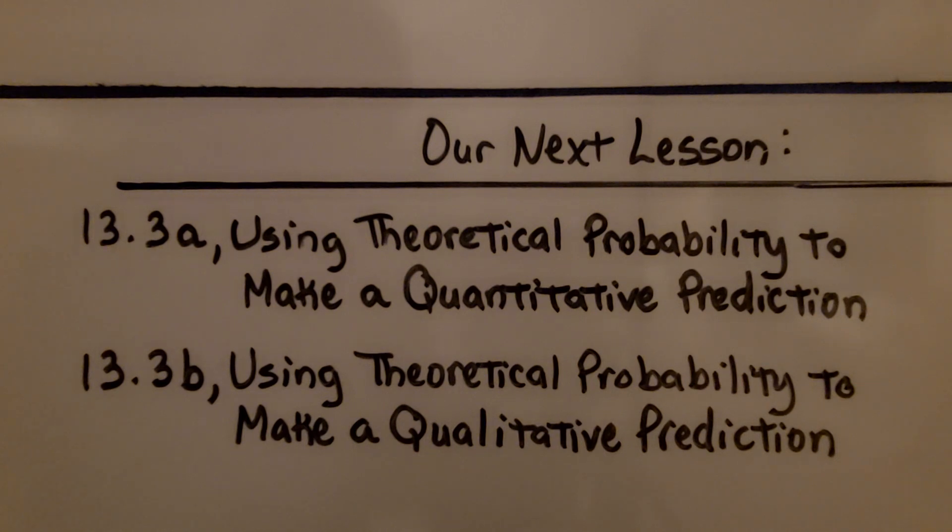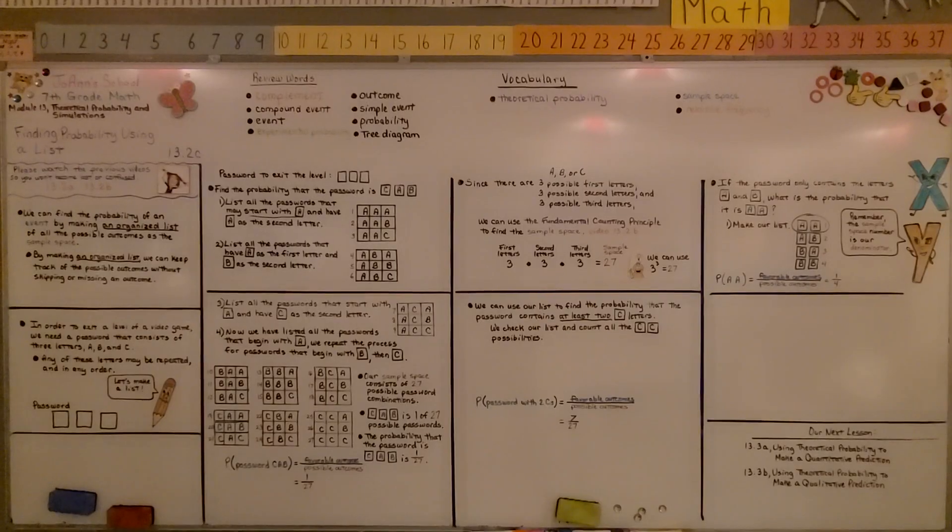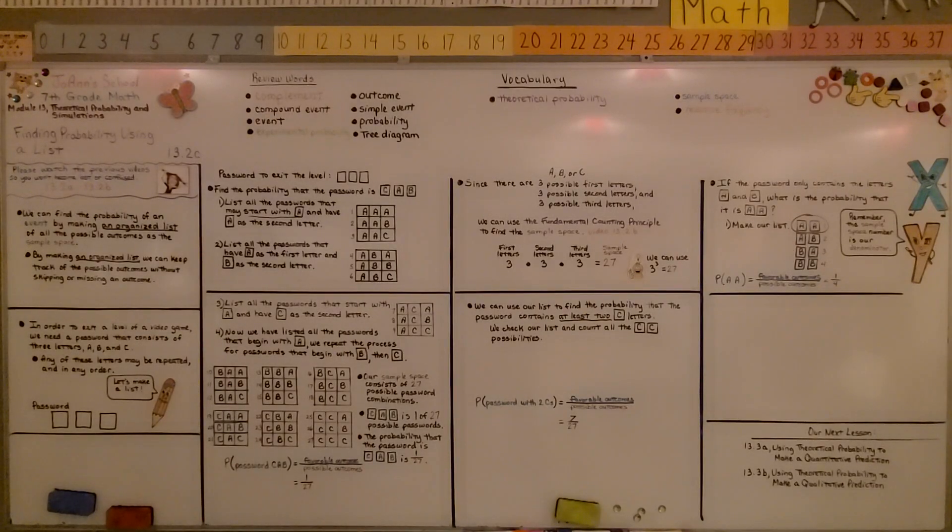We're finished with thirteen point two. We're moving on to thirteen point three. And we're going to be talking about using theoretical probability to make a quantitative prediction. When we're dealing with a list of all the possible outcomes, it's helpful to either circle them or make a little side list on scratch paper to show how many of the possibilities there are. Like when we were doing at least two Cs, we can write that on scratch paper on the side or circle the ones that have two Cs to make sure our count is correct. Have a great day, and join me for the next lesson. Bye.